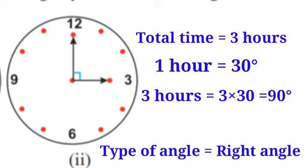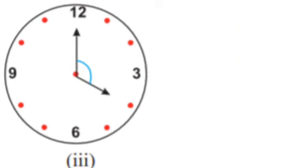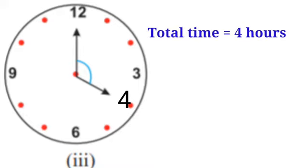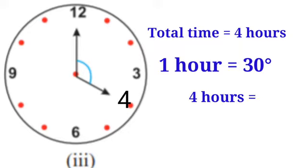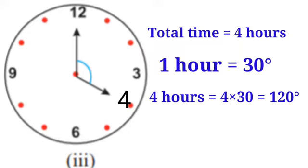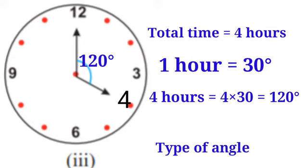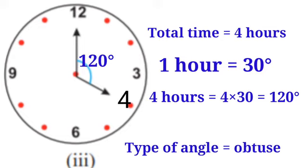Third clock — the long hand is at 12 and the short hand is at 4. The time period is 4 hours. 4 × 30 = 120 degrees. 120 degrees represents an obtuse angle, so the type of angle is obtuse angle.